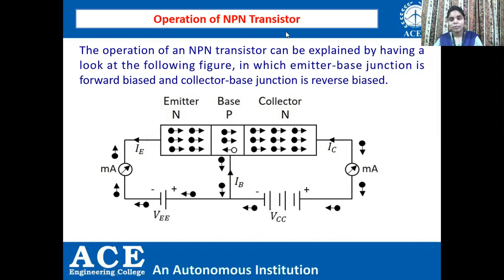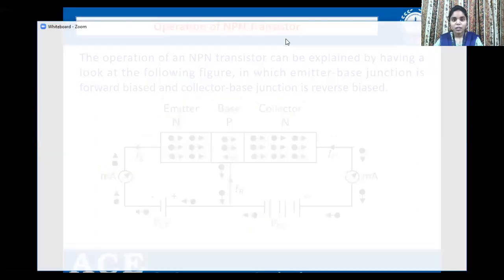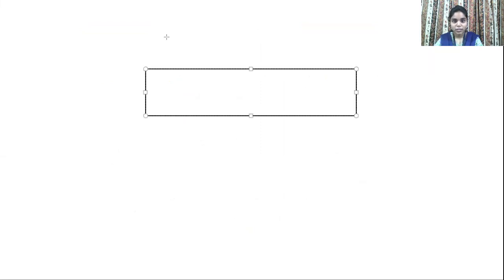Let us draw and visualize it on a whiteboard. I am taking an NPN transistor and marking the emitter, base, and collector. The width of the collector will be more compared to the emitter, and the width of the base is less compared to the emitter. Now let us give the biasing.